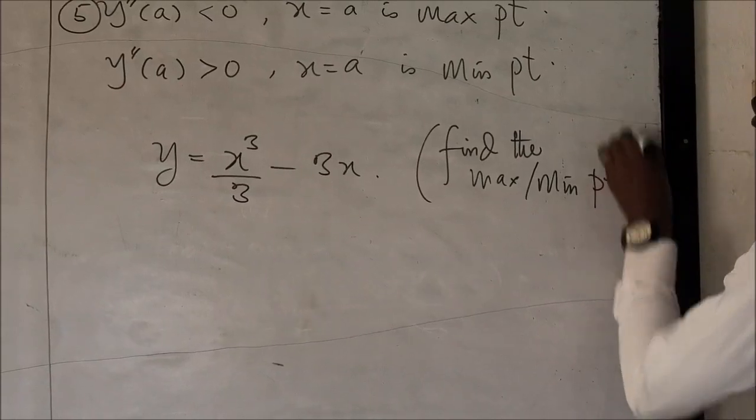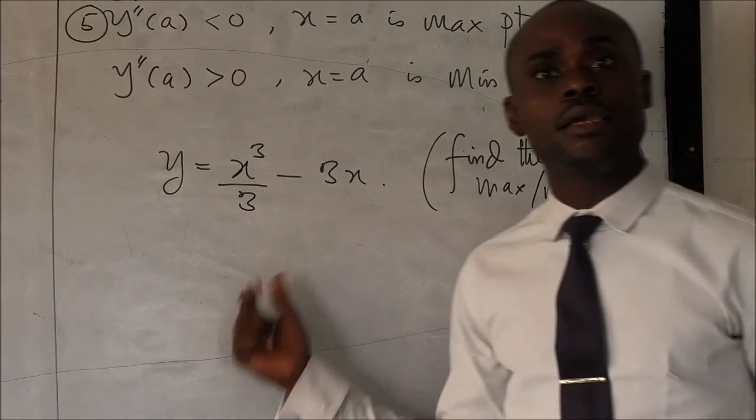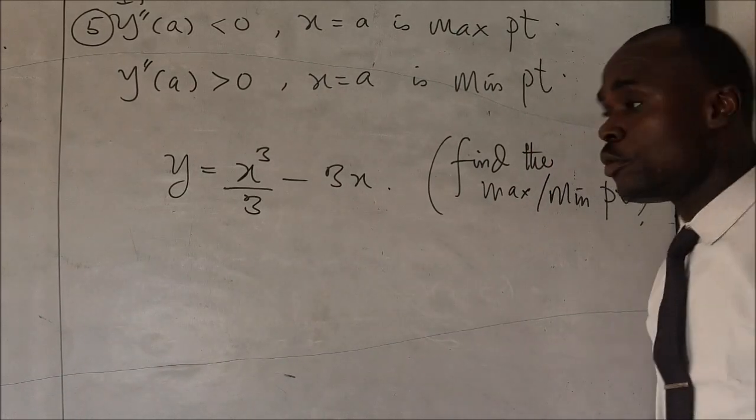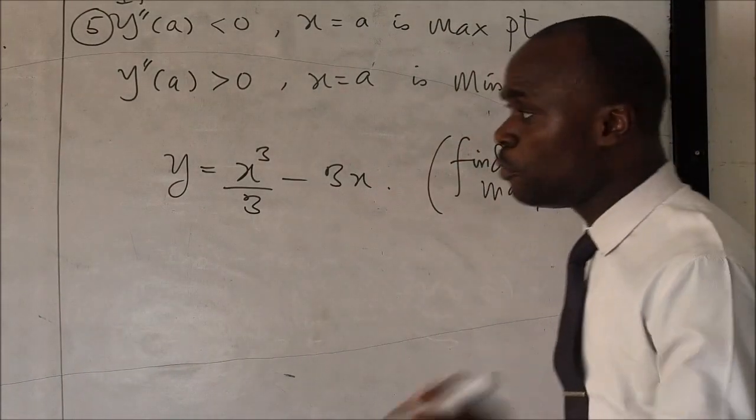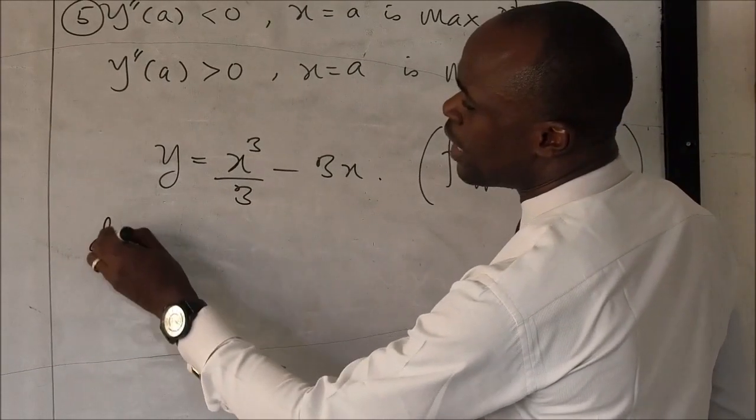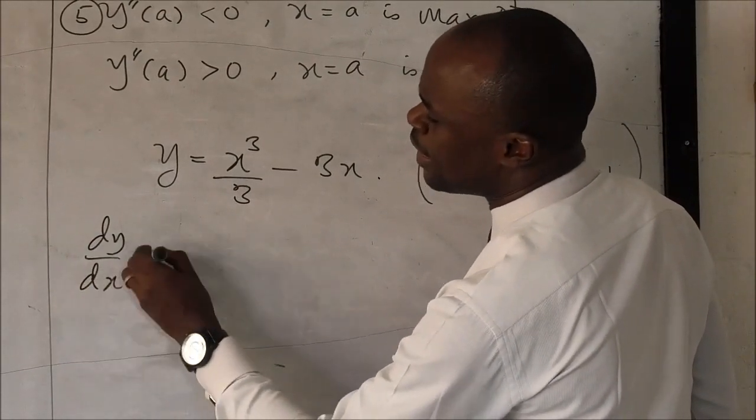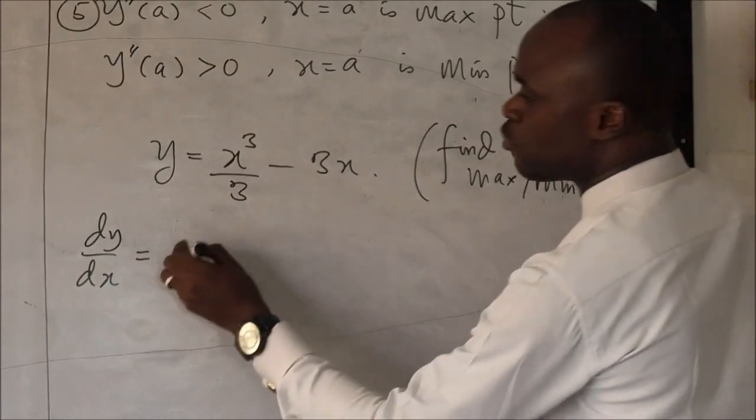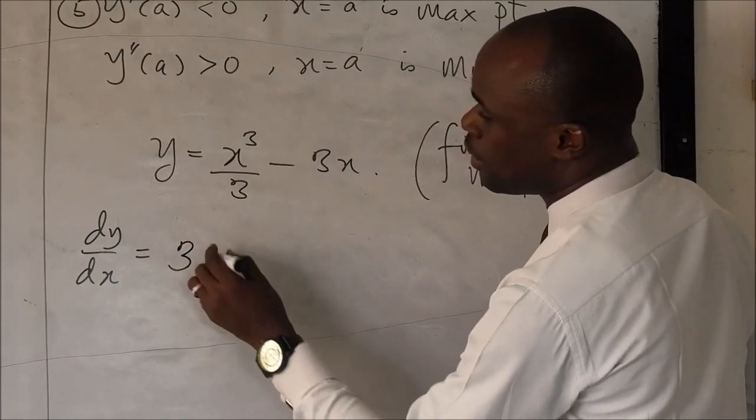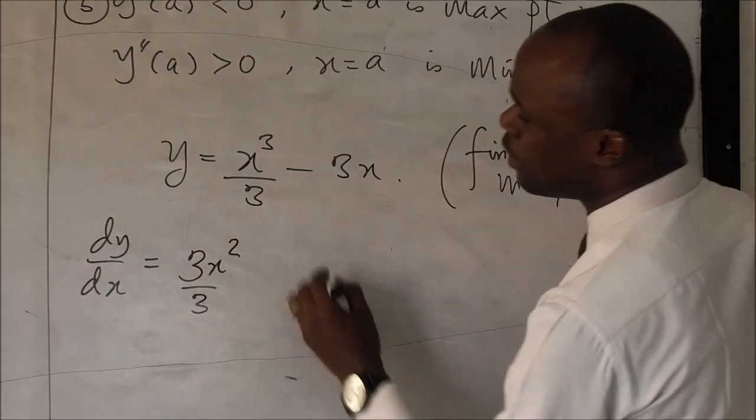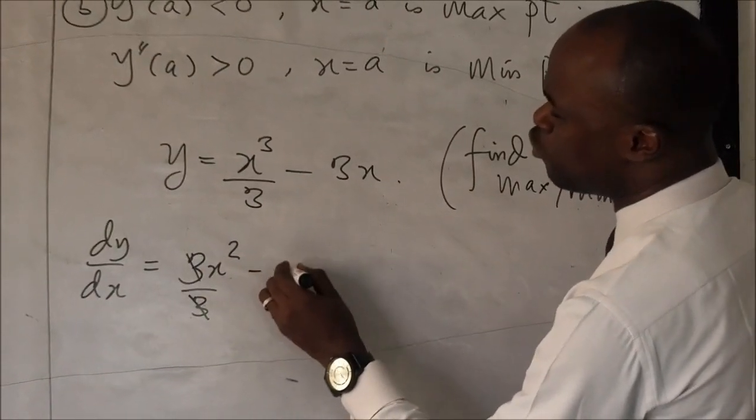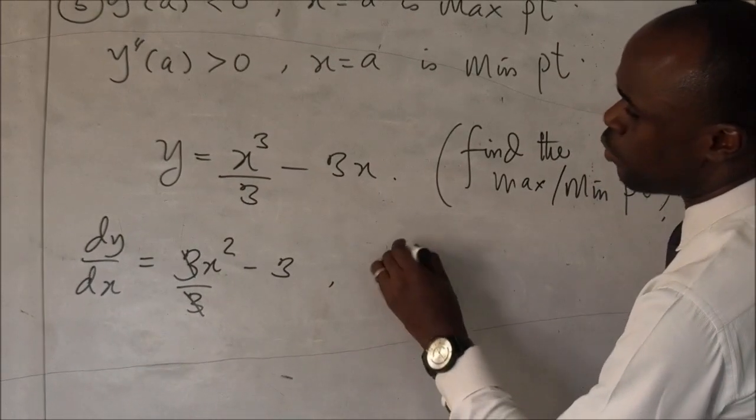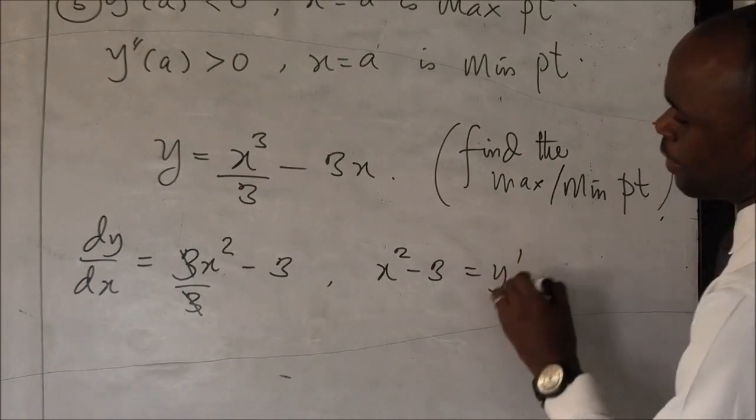So, in some terms, you can be told to find the stationary point, or critical point. Yeah, critical point. So, let's do that together. In some few minutes, the first step is to find the dy/dx. And the dy/dx, please refer to my video on differentiation. This is going to be three x squared over three. This will cancel, so this is going to be three. So, we are going to be having x squared minus three as our y prime.